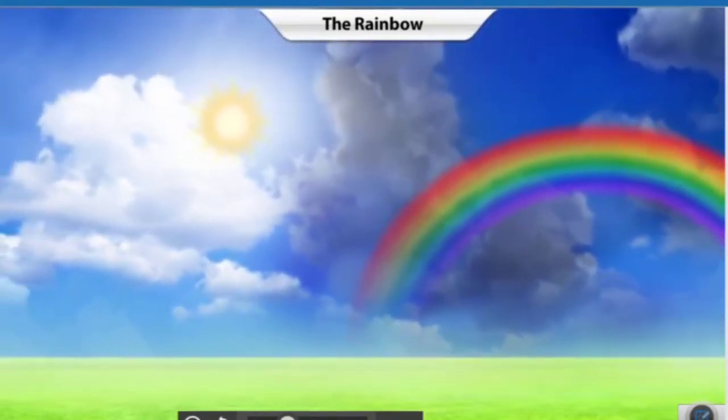A rainbow is formed in the sky with the help of two things: the sun and water droplets. These water droplets could be in the form of rain, cloud, or mist.